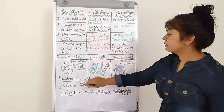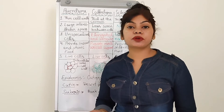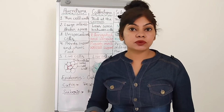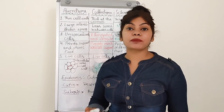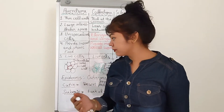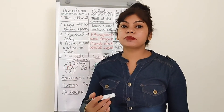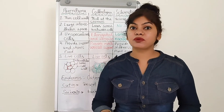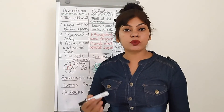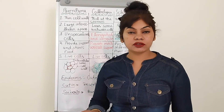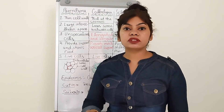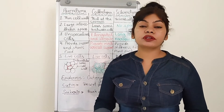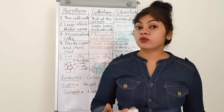Now we will talk about the epidermis. It is the outermost layer of plant parts — leaves, roots, or stems. It protects the plant from damage and the invasion of parasitic fungi. It also prevents loss of water, helping the plant retain its water.